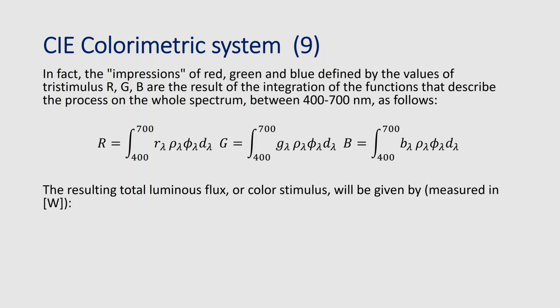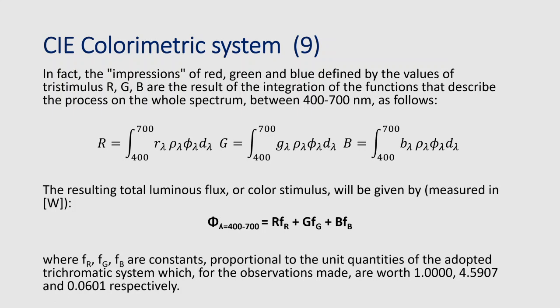The resulting total luminous flux — or color stimulus — is given by these three integrals. When resolving them, the result is a flux going to our cones equal to the sum of the red, green, and blue components multiplied by the coefficients fr, fg, and fb for every single component. These three coefficients are constants proportional to the unit quantities of the adopted trichromatic system, with values fr = 1, fg = 4.59, and fb = 0.0601 respectively.